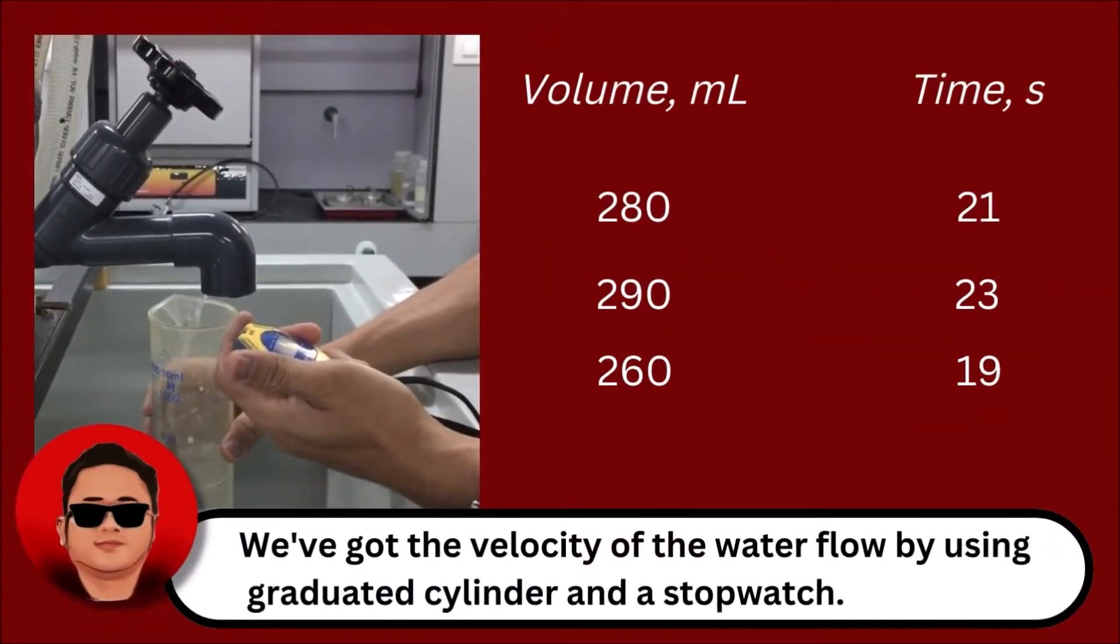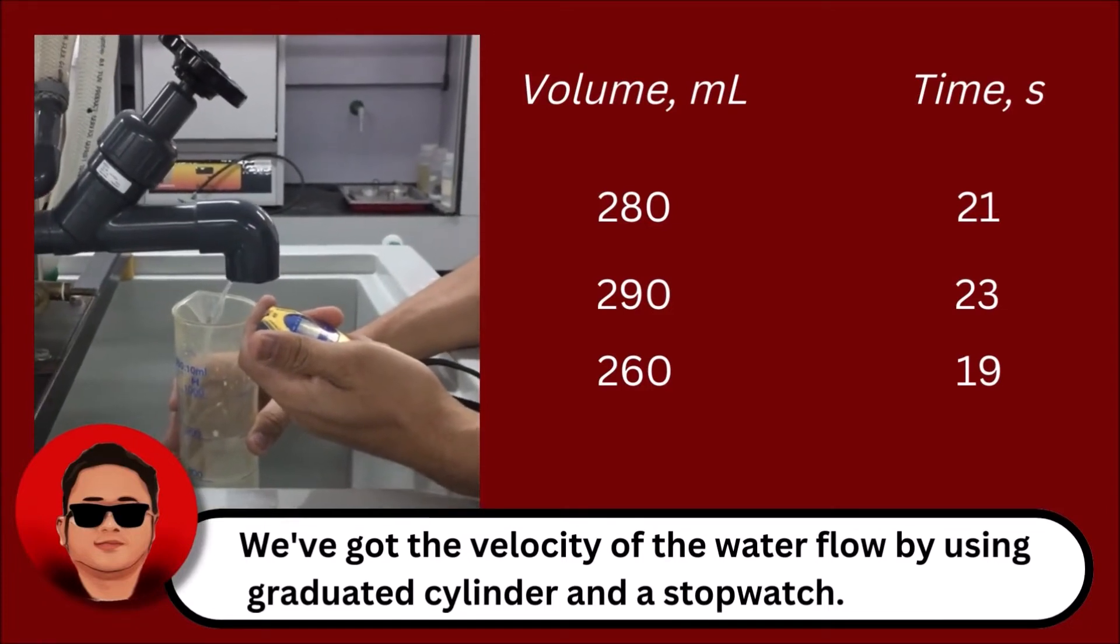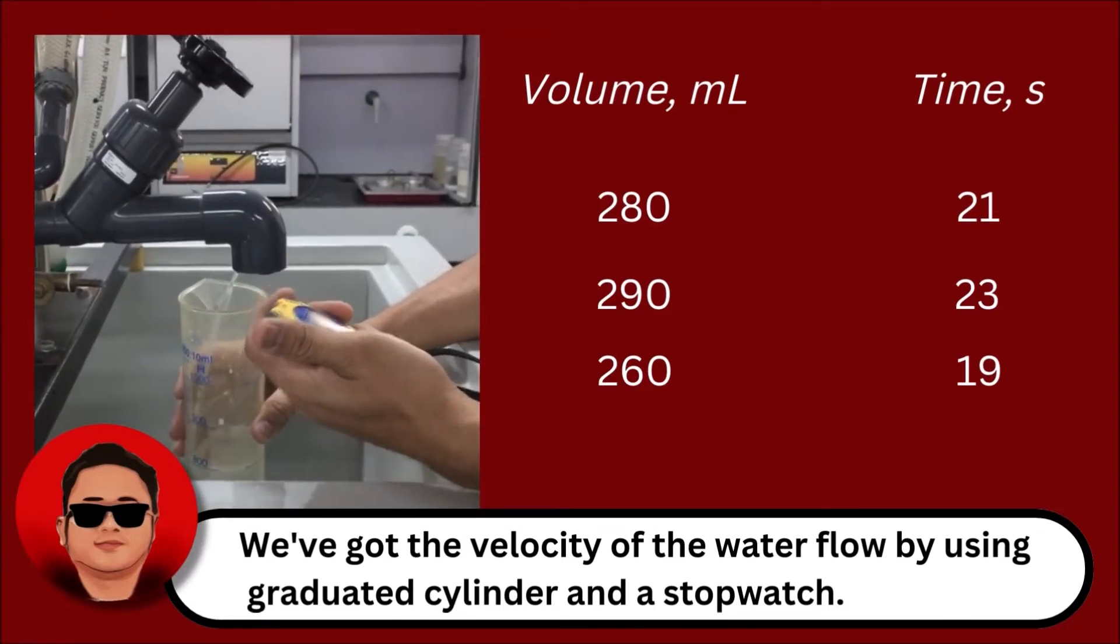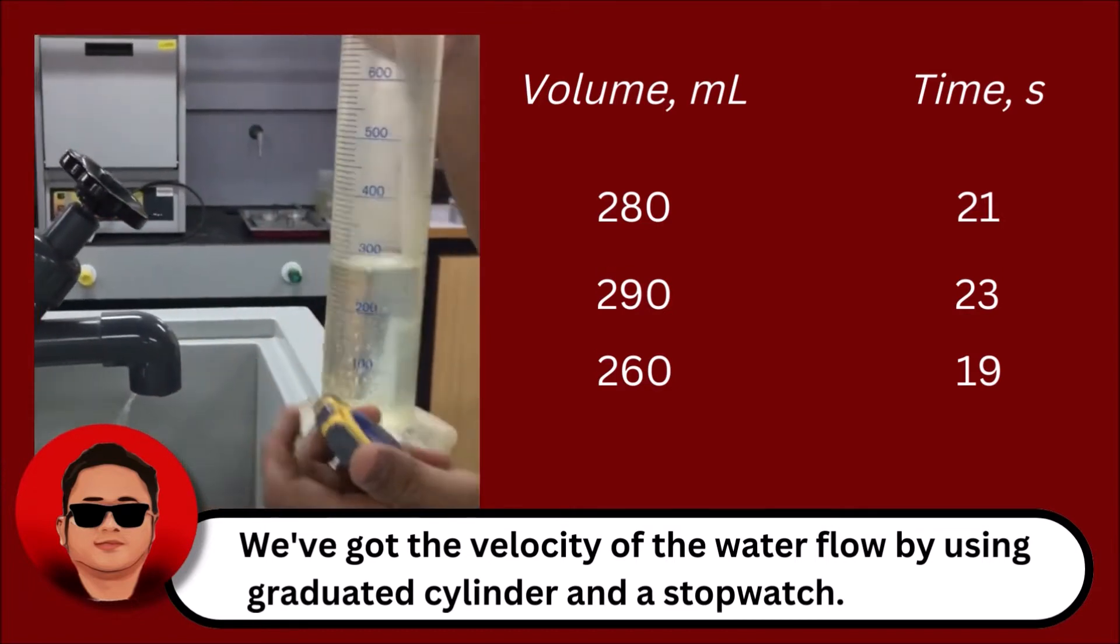We've got the velocity of the water flow by using graduated cylinder and a stopwatch. Start the timer once you start collecting water, then when you had sufficient amount, remove it and stop the timer at the same time.